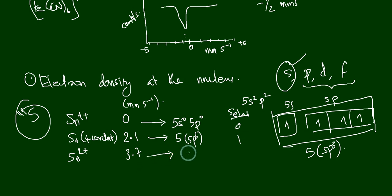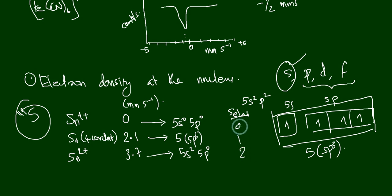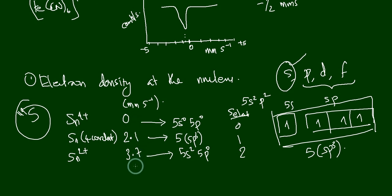From Sn⁴⁺ to covalent Sn to Sn²⁺, the s-electron count increases from zero to one to two. The corresponding Mössbauer chemical shifts increase from 0 to 2.1 to 3.7 mm/s. This clearly demonstrates that the s-electron density at the nucleus directly influences the chemical shift of Mössbauer nuclei.